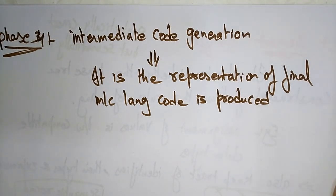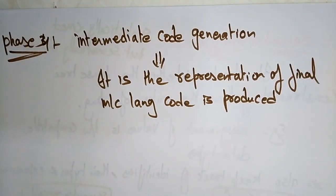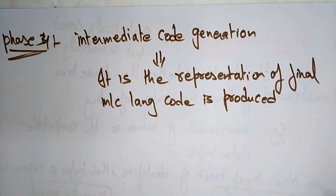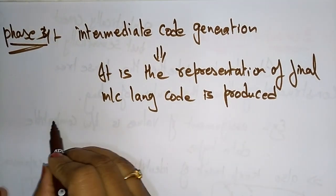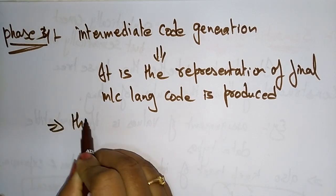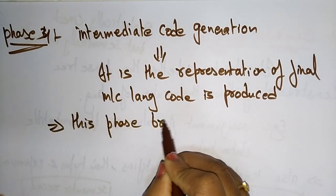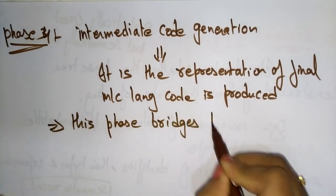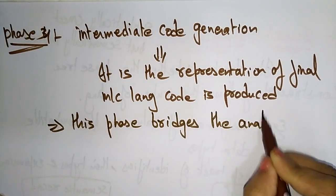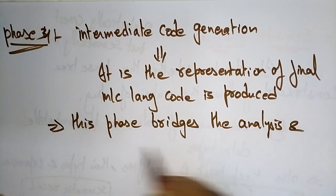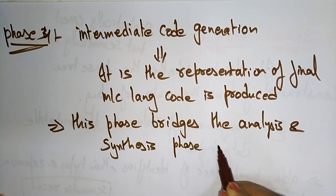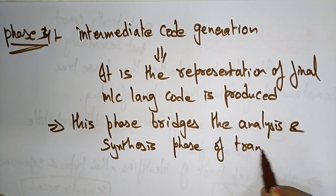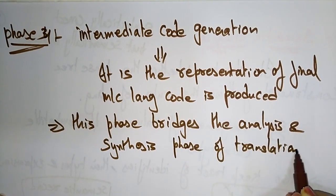The synthesis phase is concentrating on the machine-dependent side. Phases 1, 2, and 3 are language-dependent, but from phase 4 onwards everything is machine-dependent. This phase bridges the analysis and synthesis phases of translation — it acts as a bridge between analysis and synthesis.